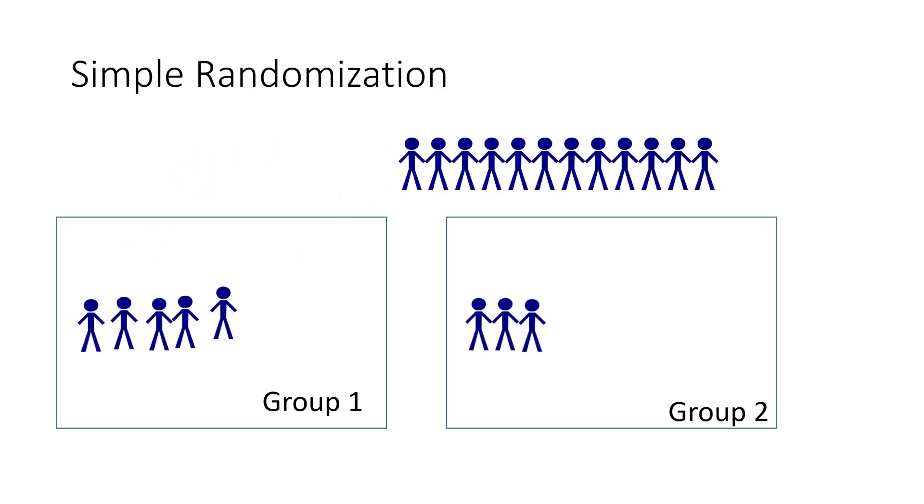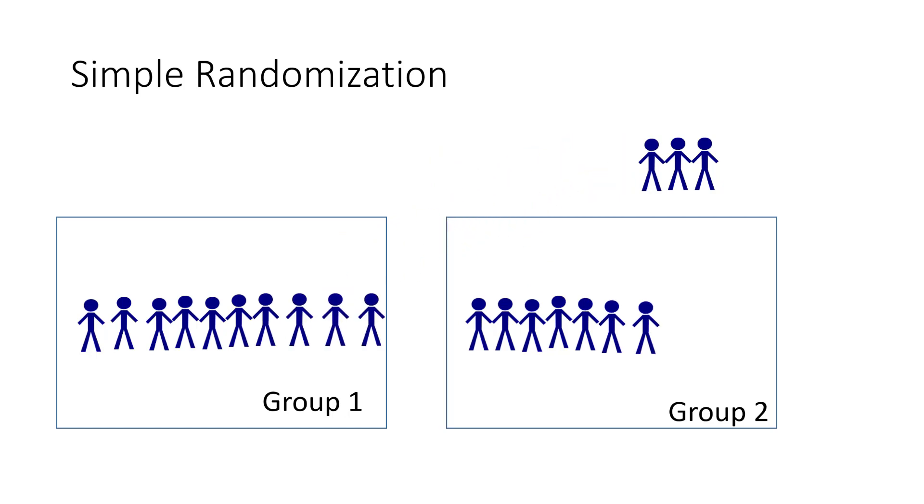If you have a large sample, this method works well. You end up usually with roughly even groups and even distribution of key characteristics. However, in smaller samples like you see here, you run the risk of uneven group size. So for that, we would use block randomization.